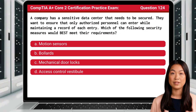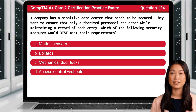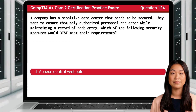Question 124. A company has a sensitive data center that needs to be secured. They want to ensure that only authorized personnel can enter while maintaining a record of each entry. Which of the following security measures would best meet their requirements? The answer is D: Access Control Vestibule.